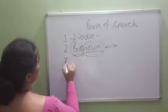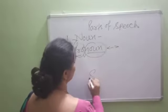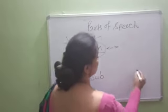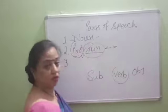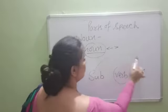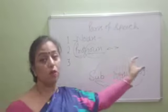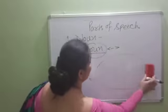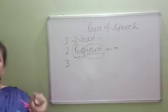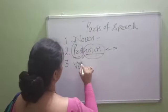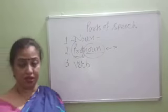Coming to the third one, which is the basic. Whenever we are writing a sentence, it comprises a subject, object, and verb. If verb is not there, subject and object are useless. So a sentence comprises subject, object, and verb. Verb is basically an action word — the main requirement of a sentence is a verb. All action words are known as verbs.